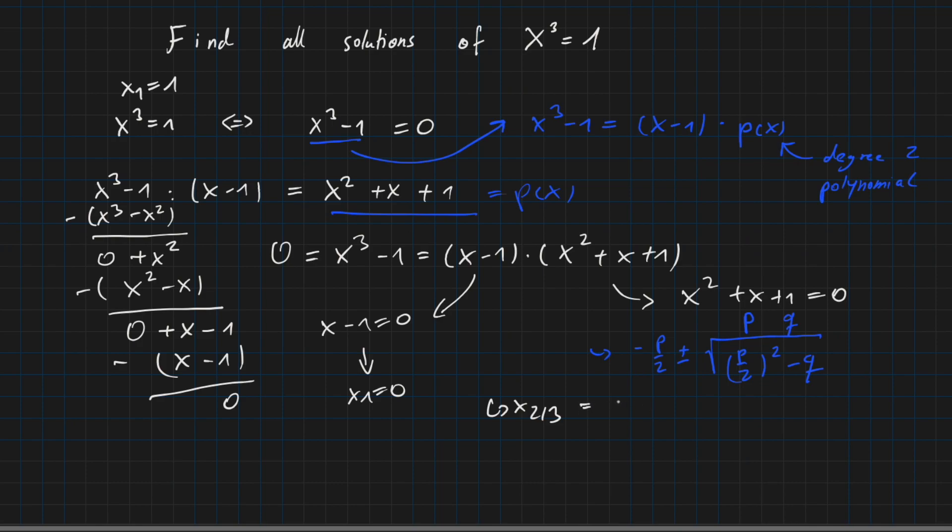As minus 1 over 2 plus minus root of 1 over 2 squared minus 1. So this simplifies as minus 1 over 2 plus minus the square root of minus 3 over 4. And now let's stop for a moment.